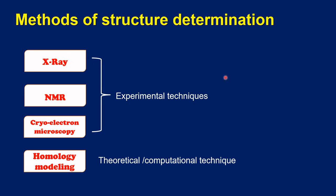The experimental techniques are X-ray, NMR, and cryo-electron microscopy. When it is not possible to get a protein structure using the experimental techniques because of different experimental challenges or facilities, what we have to do is perform homology modeling.